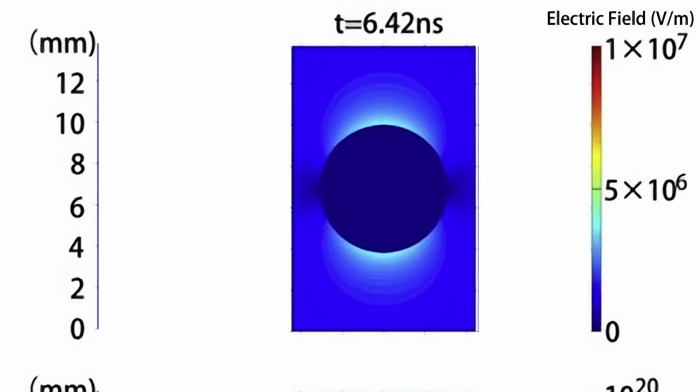Falling charged droplets may develop instabilities, creating sharp points that generate large dielectric constants in a very small region near these points. These points can produce a corona that diminishes the charge on the droplet.